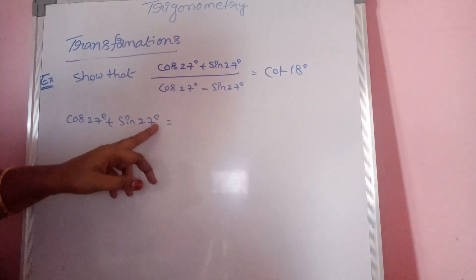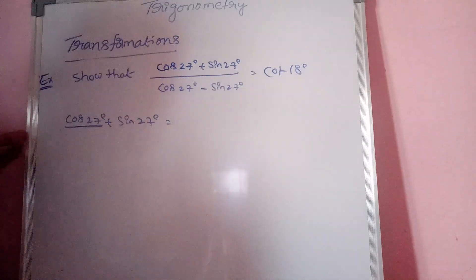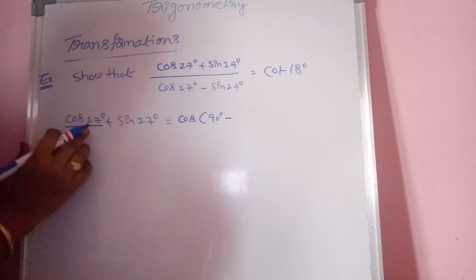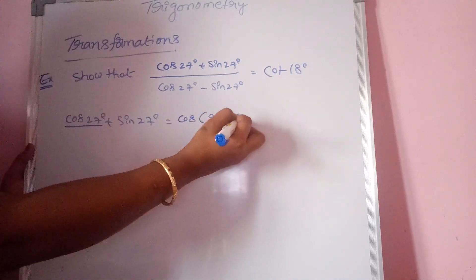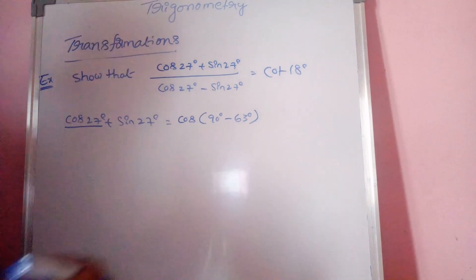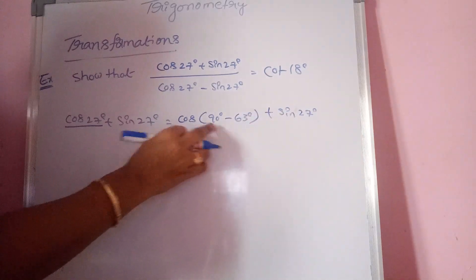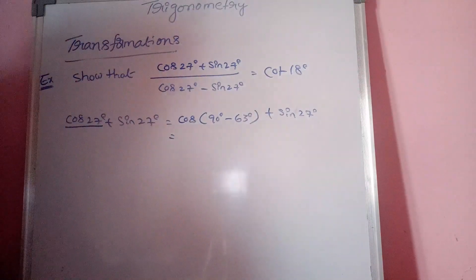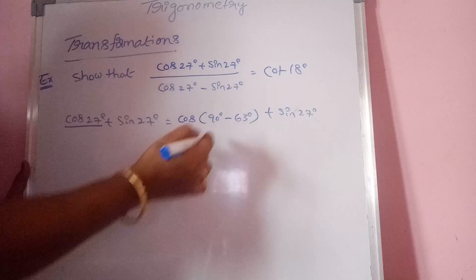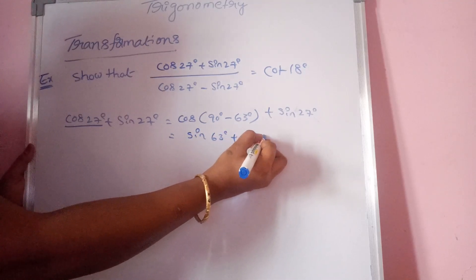Here cos 27° plus sin 27° — we need to convert this into sine form. Using allied angles, cos 90° minus 63° equals sin 63°, since 90 minus 63 equals 27. So cos 27° plus sin 27° becomes sin 63° plus sin 27°.